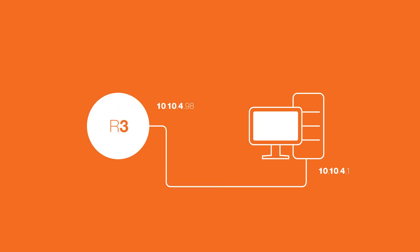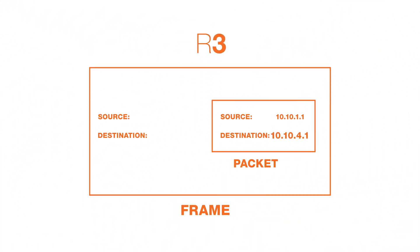Then R3's right interface finishes it off by actually ARPing for the destination, since the right interface of R3 is actually on the destination's network. The final frame has a source MAC address of the right interface of R3, and a destination MAC address of the actual destination, Host X.